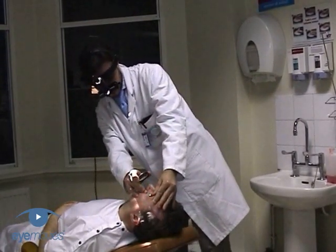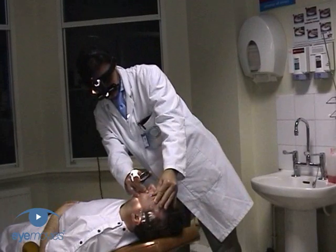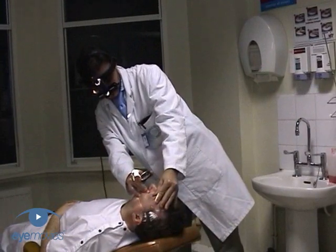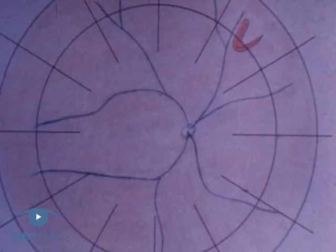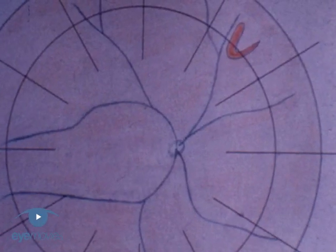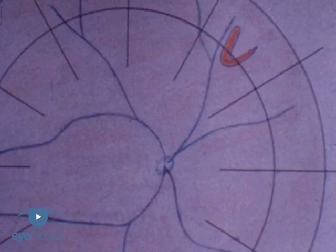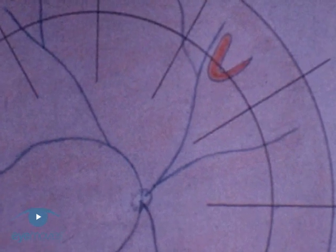Having identified all the breaks, it is important to make drawings which can be referred to in theatre, showing their location, particularly with reference to easily identifiable landmarks, such as vascular bifurcations.